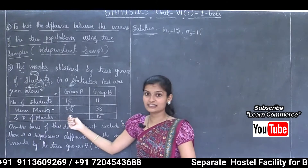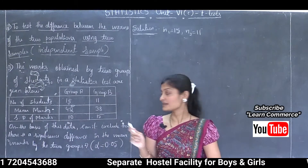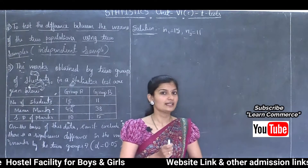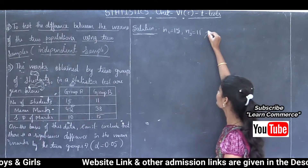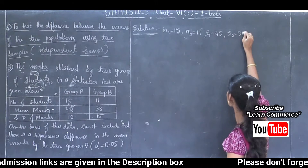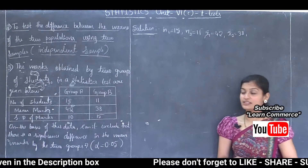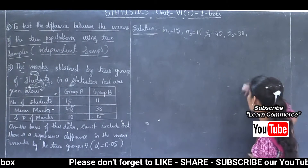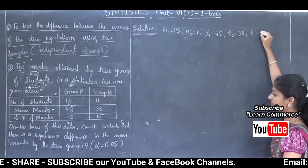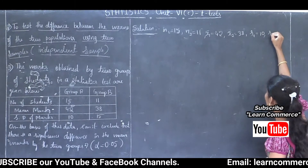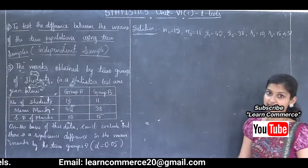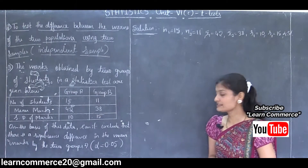Here mean marks are given — that is sample mean marks, denoted by X̄. Since there are two sets of observations, X̄1 is equal to 42 and X̄2 is equal to 38. Next, standard deviation of these two observations are given, denoted by S. So S1 is equal to 10 and S2 is equal to 15. Alpha is given as 0.05, that is 5 percent — the level of significance.